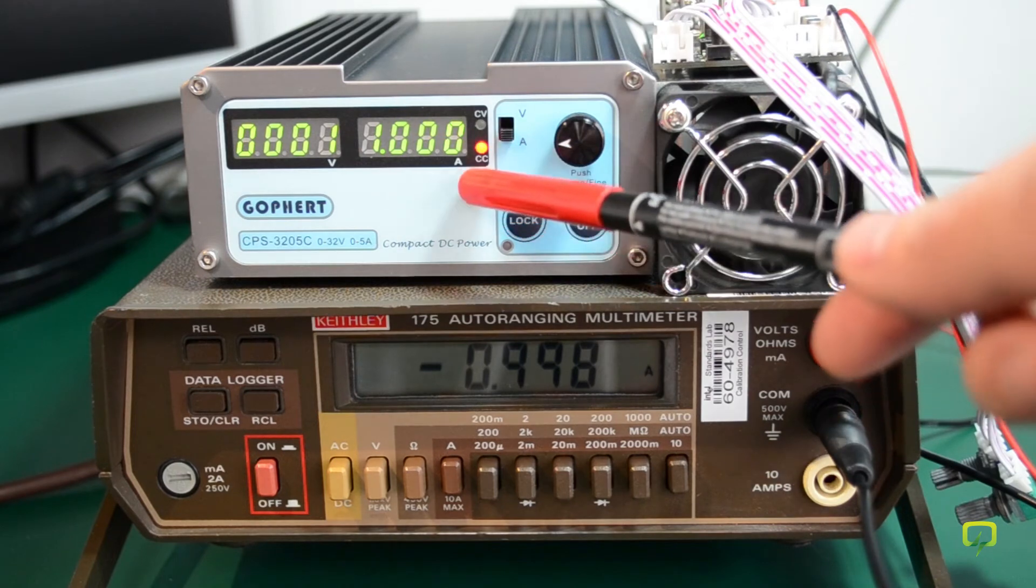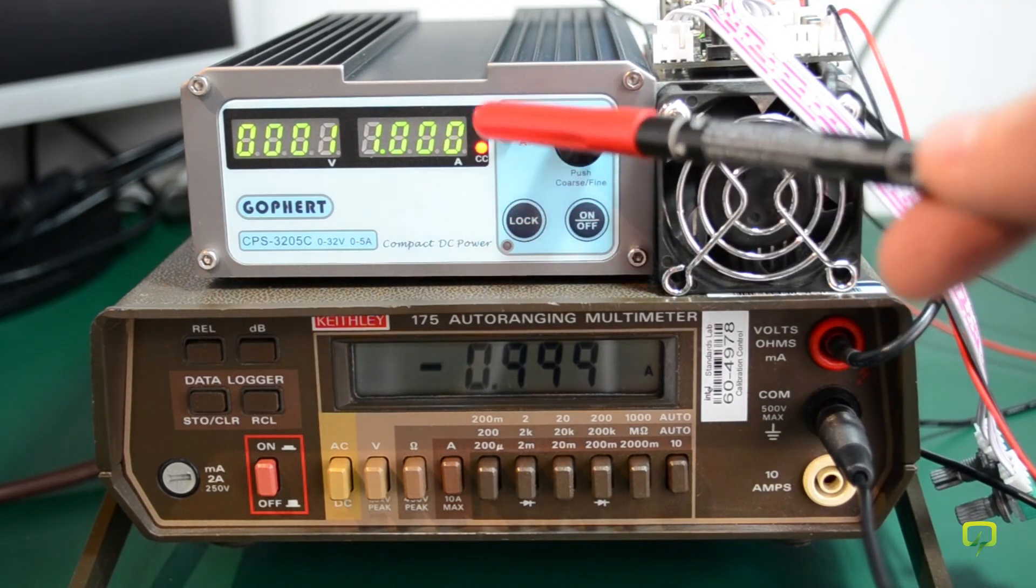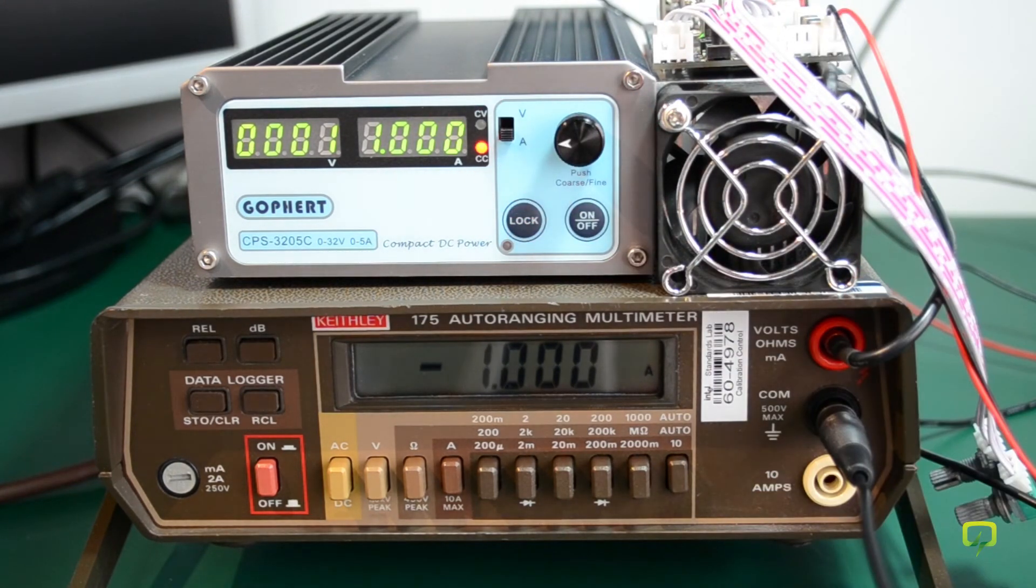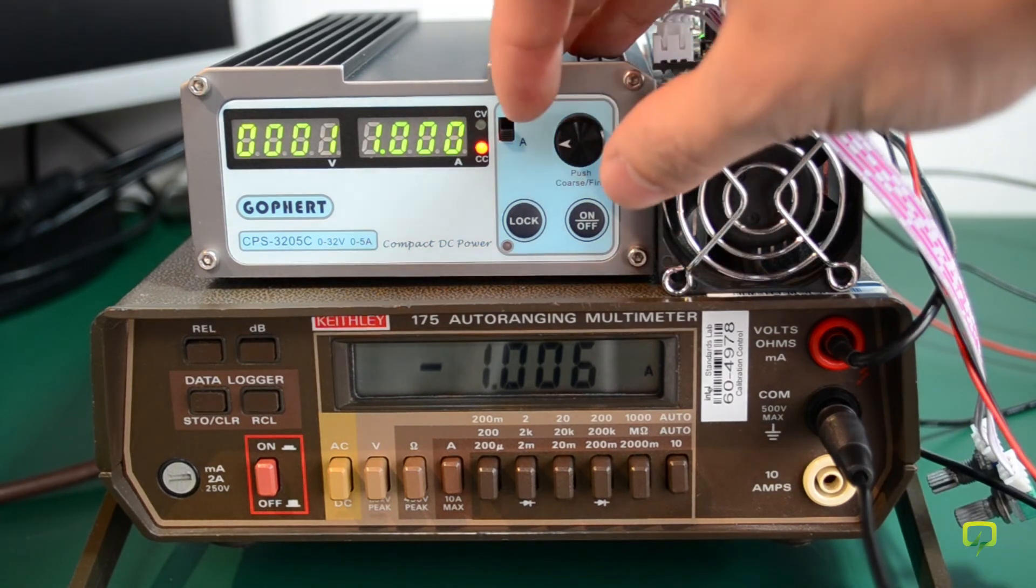The power supply is operating in constant current mode, and it is in the 1 amp calibration range. Now you have to adjust the output of the power supply to set the constant current to 1.000 amps. So let's try to do that.